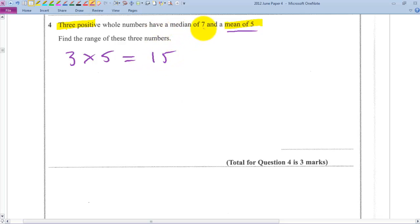And you know they have a median of 7. Well, with three numbers, the median value must be the middle value, which is 7. So there must be a number greater than 7 and a number less than 7.